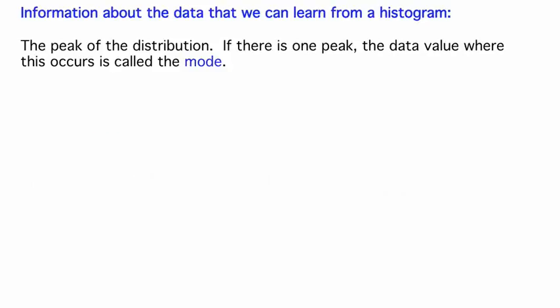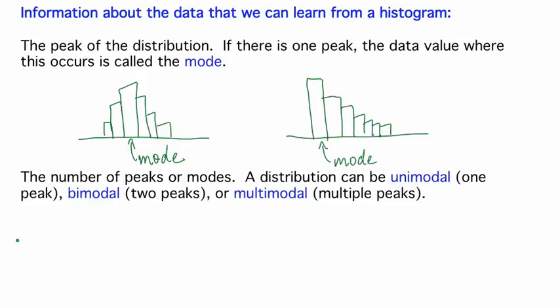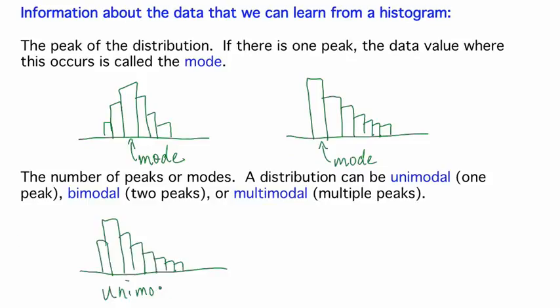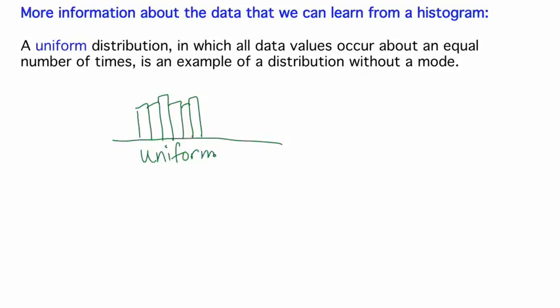From a histogram, we can get lots of information about the data. We can learn the peak of the distribution. If there is one peak, where it occurs is called the mode, corresponding to the most common bin of data values. We can learn the number of peaks or modes. A distribution can be unimodal, meaning it has one peak, or bimodal, having two peaks, or multimodal, having multiple peaks. A uniform distribution, in which all data values occur about an equal number of times, is an example of a distribution without a mode.